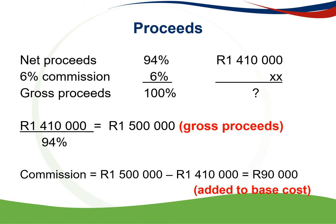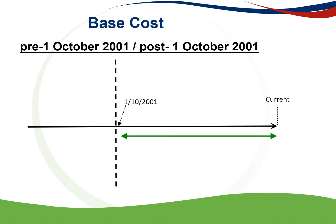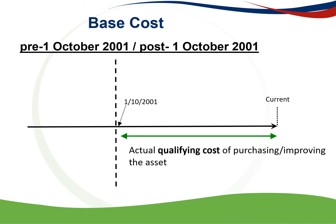You can also calculate the agent's commission as 6% times 1,500,000 rand. The base cost: it's important to distinguish between assets that were purchased before 1 October 2001 and assets purchased on or after 1 October 2001. For assets purchased from 1 October 2001, the base cost consists of all the actual qualifying costs in purchasing or improving the asset.